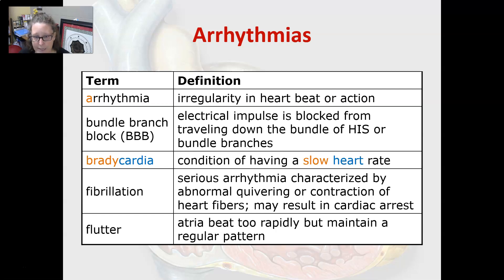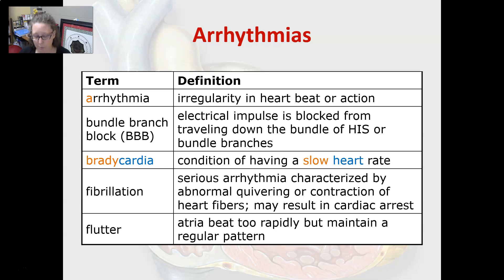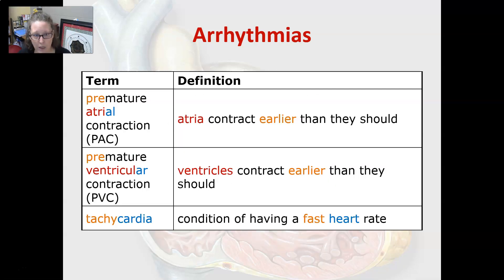Fibrillation is a serious arrhythmia characterized by abnormal quivering or contraction of the heart fibers, and it can result in cardiac arrest. Flutter is when the atria beat too rapidly but maintain a regular pattern — the problem is they can't properly receive blood and empty it into the ventricles. Premature atrial contraction (PAC) and premature ventricular contractions (PVC) are two other arrhythmias.